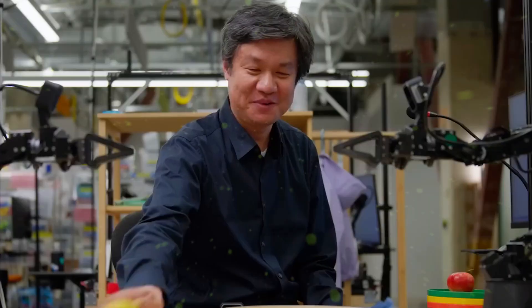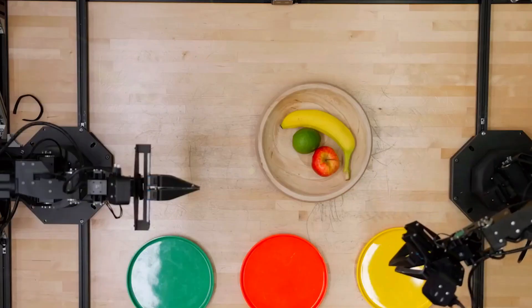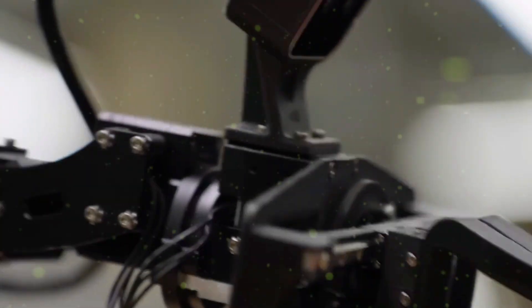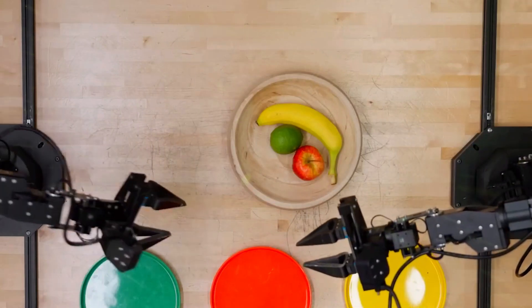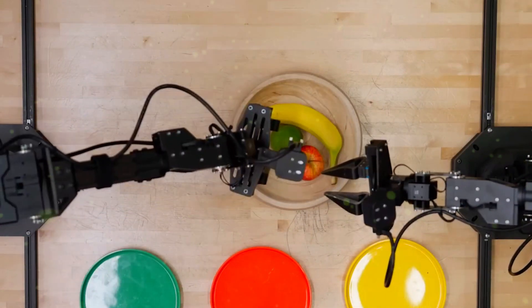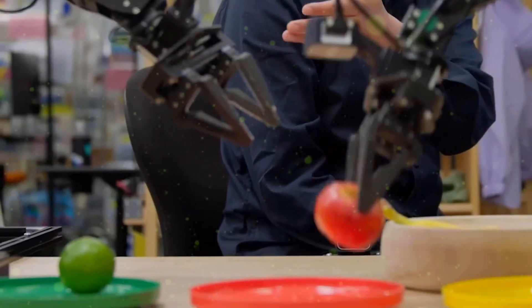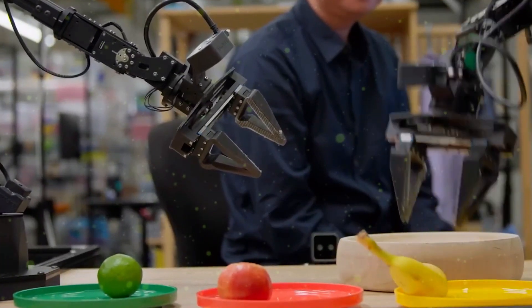Another robot was told to sort fruits into color-matching plates. Banana? Yellow plate. Green apple? Green plate. Sounds simple, but think about it. It had to see, recognize colors, plan the sequence, and then act. That chain of thoughts is what makes Gemini 1.5 so powerful.